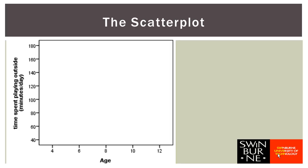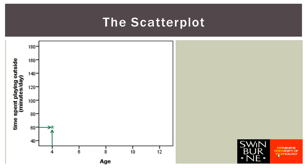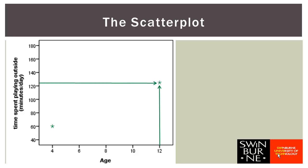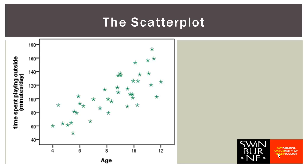Looking at how we plot those points: the first child had an age of four and spent 60 minutes per day playing outside, so their point goes here on the graph. The second child was 12 years old and spent 125 minutes per day playing outdoors, so this represents the second child. We could plot all cases by hand, but that would be fairly tedious. Instead, we can get SPSS to produce the scatter plot for us — you'll find instructions for how to do that in the appendices in the textbook.